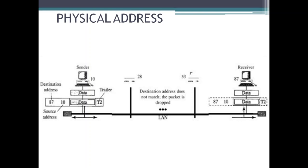As the figure shows, the computer with physical address 10 is the sender and the computer with physical address 87 is the receiver. The data link layer at the sender encapsulates the data in a frame, adding a header and a trailer. The header carries the receiver's and sender's physical addresses. In most data link protocols, the destination address — 87 in this case — comes before the source address. We have shown a bus topology for an isolated LAN.